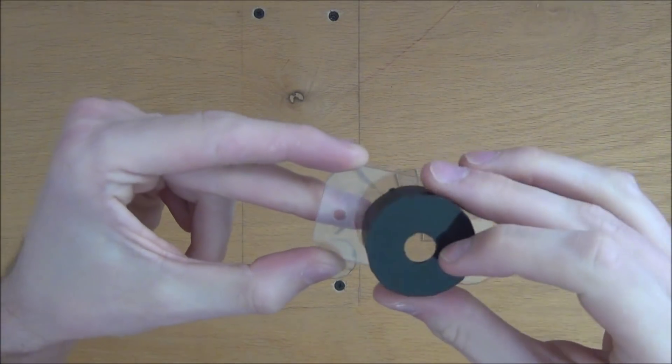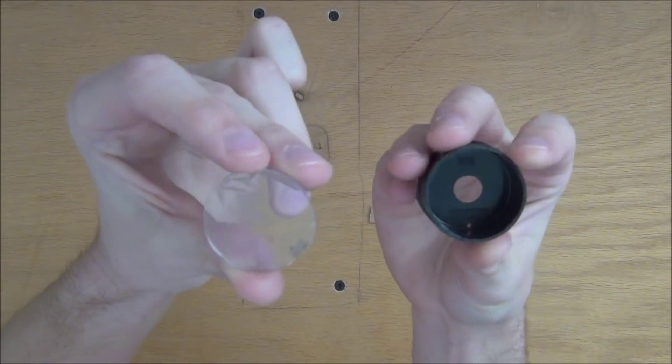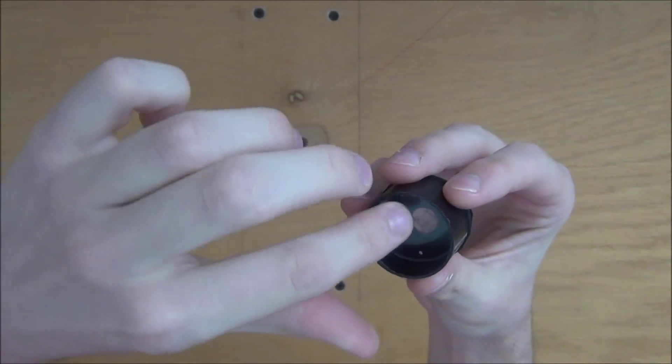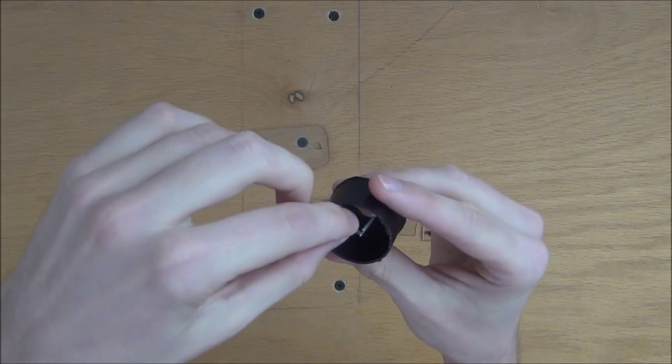Once we have everything cut out it should look like this. Here's our base plate - it's just a little bit wider than our cap and there's a hole on each end. Our circle piece fits snugly inside the cap and our four fin pieces are each about the right length.